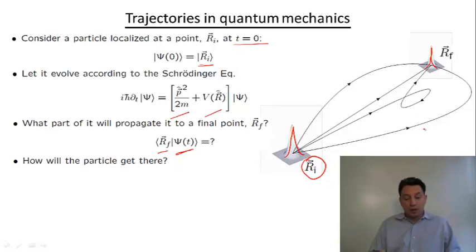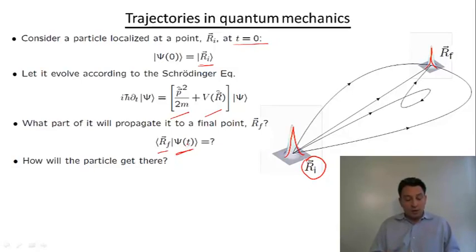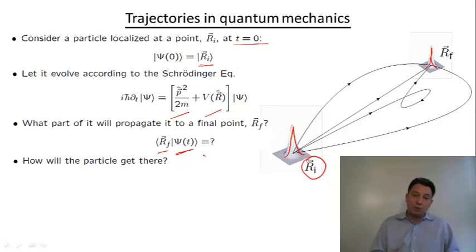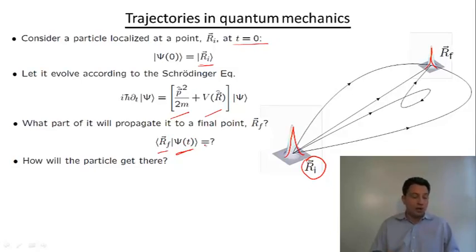To actually calculate this overlap — this propagator — we need to find the final wave function psi of t. We know the initial condition, we know the final state we want, and now we need to solve the Schrodinger equation, which in general is very complicated. But there is a formal solution we can write using the so-called evolution operator.